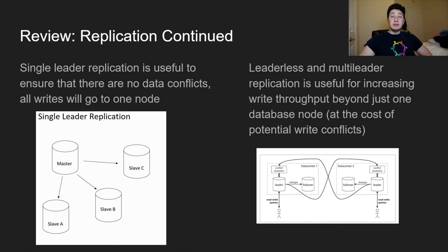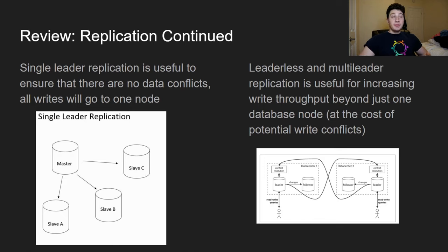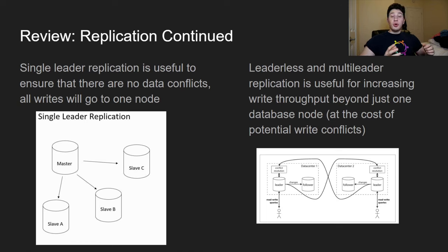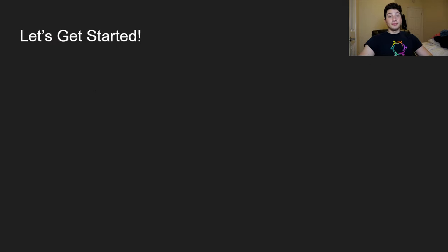With a single leader approach you have one master and a bunch of replicas, so you never have to worry about write conflicts, but you'll have lower write throughput because all writes go through that one master node. You can try to mitigate this with partitioning or sharding, but throughput is still limited. With leaderless or multi-leader replication you have technically unlimited write throughput, but the more replicas you write to, the more likely there are write conflicts — though there are smart ways to route certain writes to the same replicas.